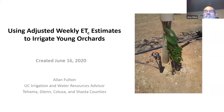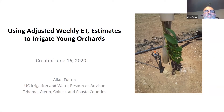Hello, I'm Alan Fulton, Irrigation and Water Resources Advisor with the University of California Cooperative Extension Service. I work in the northern Sacramento Valley in the counties of Tehama, Glenn, Colusa, and Shasta. Welcome to this tutorial on how to use adjusted weekly ET estimates to irrigate young orchards. In this tutorial we'll look at a couple of examples where we will make adjustments to the weekly crop ET reports received by growers and use them to make estimates of water needs of young trees developing at various stages.